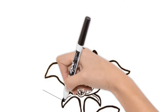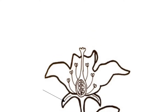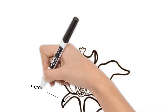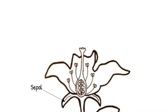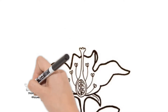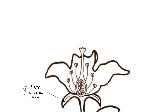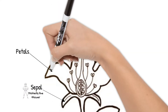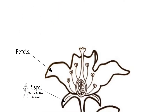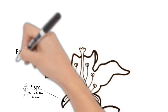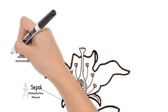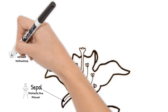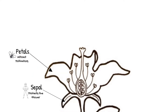This green part underneath is called the sepal. It protects the flower before it opens. The petals — you probably already know — are usually brightly colored to help attract pollinators to the flower.